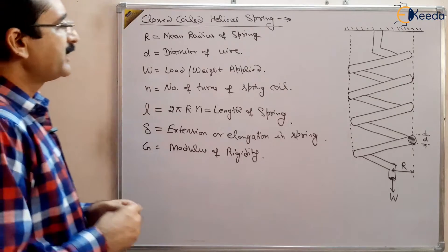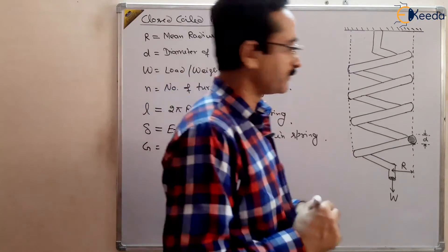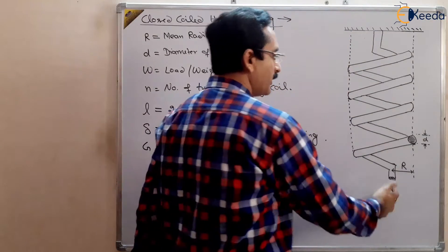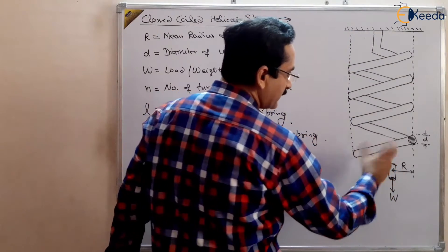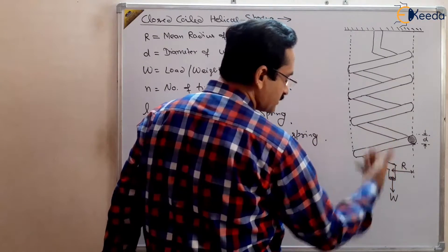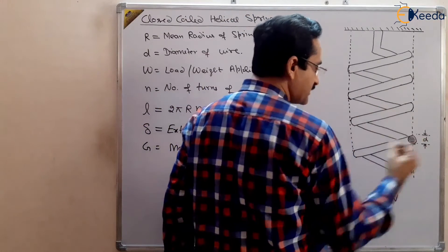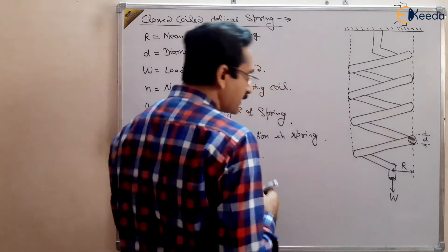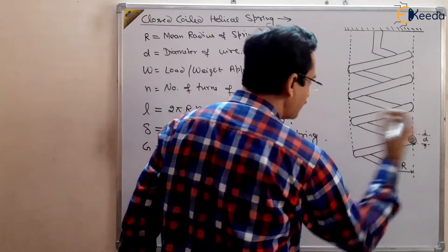Why are we studying this chapter in the topic of torsion? Because when we apply a load, actually a torque is acting on the spring. You can see here a torque is acting on the spring, due to which the spring material goes into torsion.